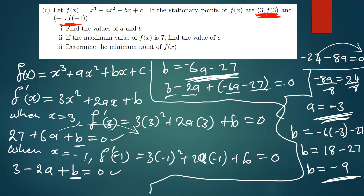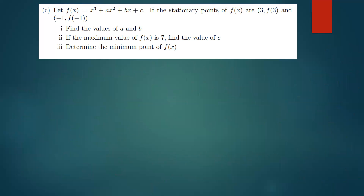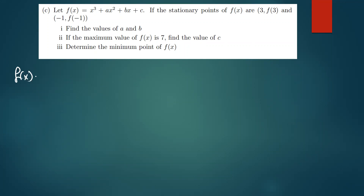Moving on to the next question: we've found a = -3 and b = -9. The question now says if the maximum value of f(x) is 7, find the value of c. So our function is now f(x) = x³ - 3x² - 9x + c, and they say the maximum value of this expression is 7.